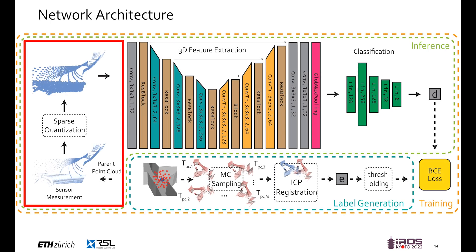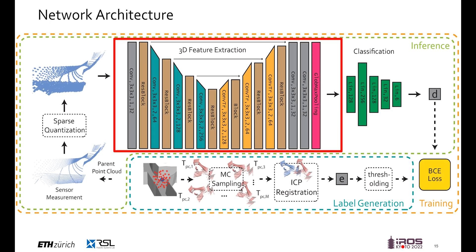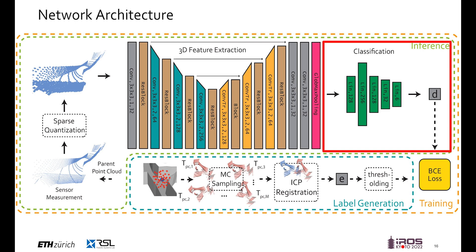For this, the sensor measurements are first quantized and converted into a sparse tensor. As a framework, we use the Minkowski engine. This allows for fast memory-efficient training at several hundred iterations per second. This sparse tensor is then fed into our sparse 3D convolutional neural network. For the architecture, we use a ResNet-inspired model. The fixed number of pooled features are then provided to a classifier, which is a simple MLP that directly predicts probabilities for each of the six labels.